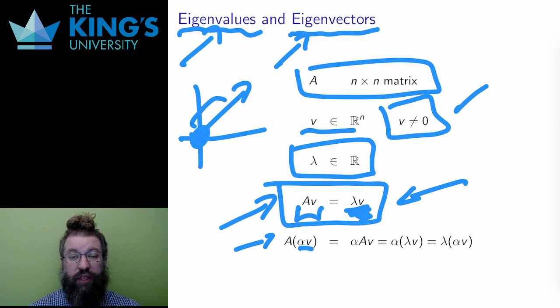If I have a multiple of V, alpha V, for alpha is some non-zero number, then the action is linear, so the scalar can come out. Well, then the action AV produces lambda V, and then since I am multiplying by two scalars, I can change the order.